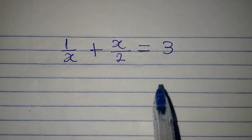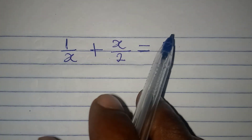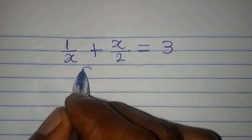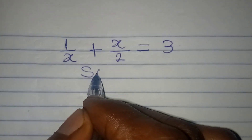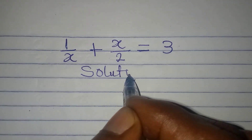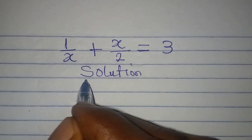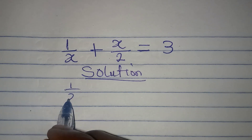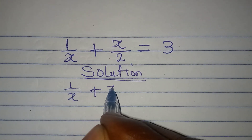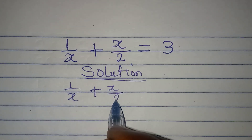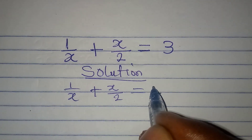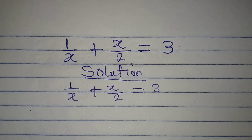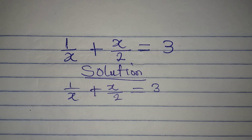Hello everyone, let's solve this problem very quickly. Solution: we have 1/x + x/2 = 3. Now the first step to be taken is to find the LCM of this and deal with it.